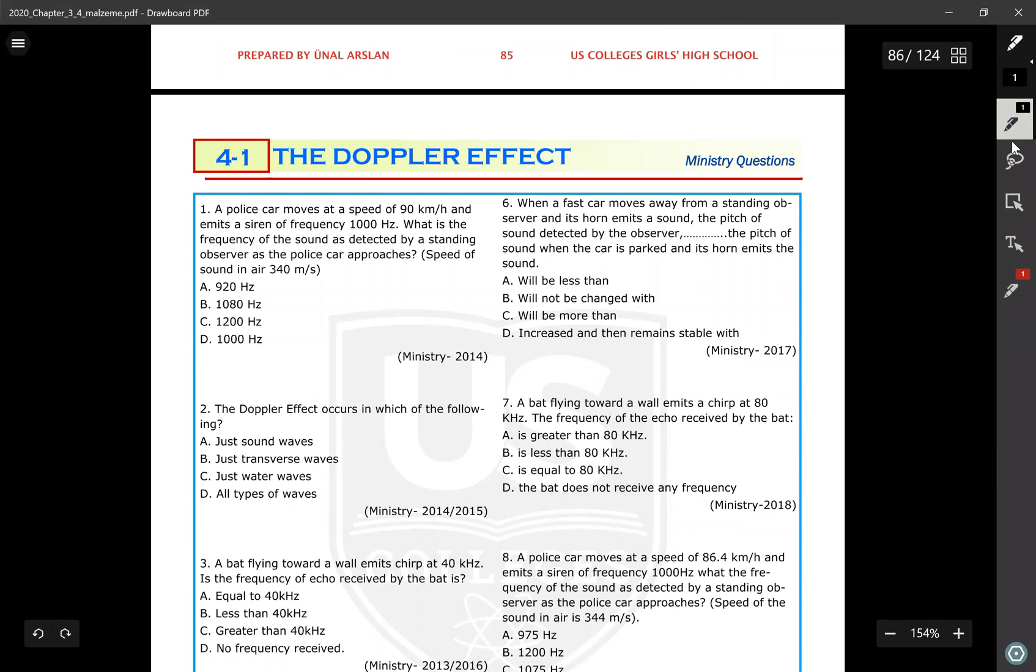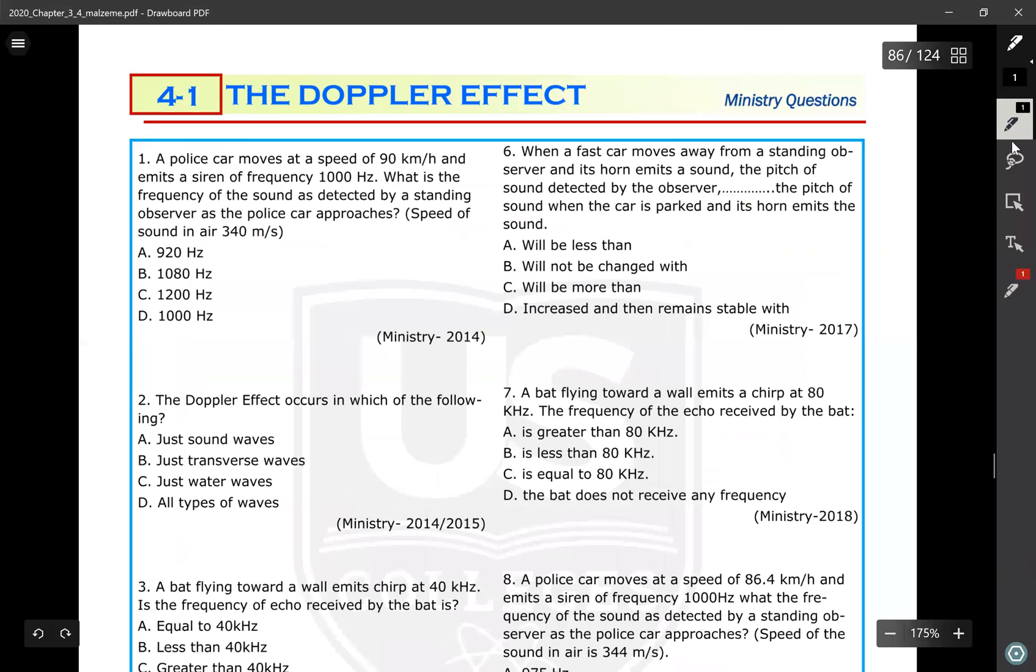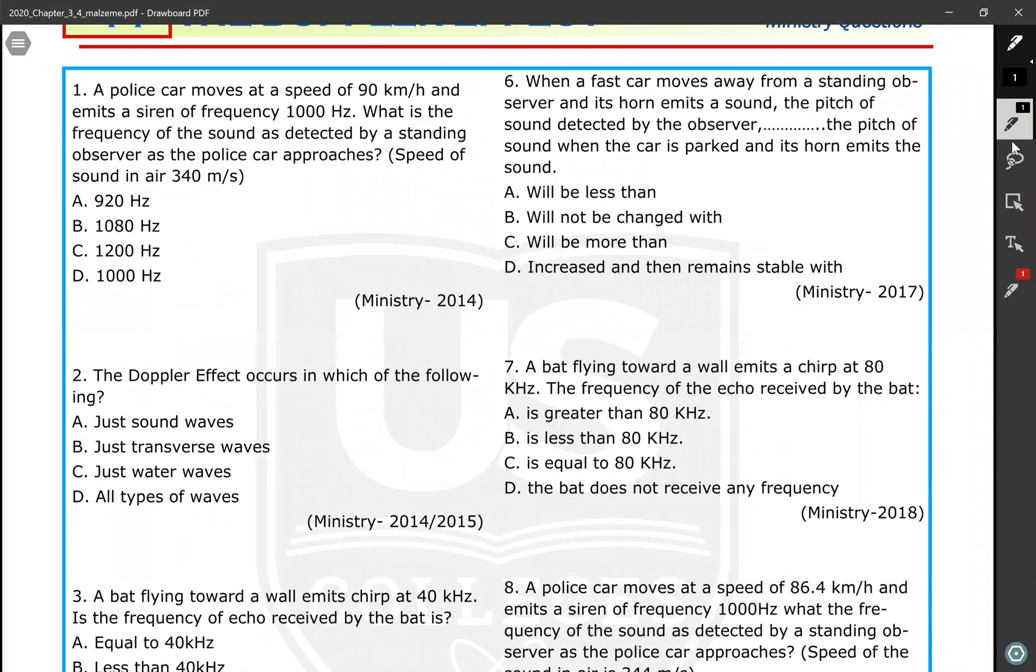A police car moves at a speed of 90 kilometer per hour and emits a siren of frequency 1000 hertz. So this is the original frequency f of the source. This is the police car - it's the source. So it emits the sound. The source is moving at the speed of 90 kilometer per hour. What is the frequency of the sound as detected by a standing observer? Frequency of the sound detected means f prime. What is f prime?